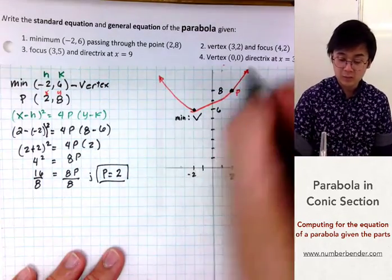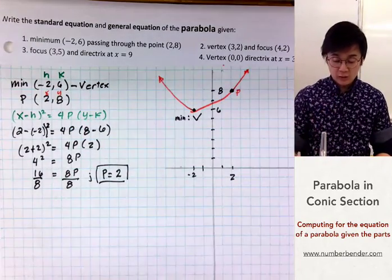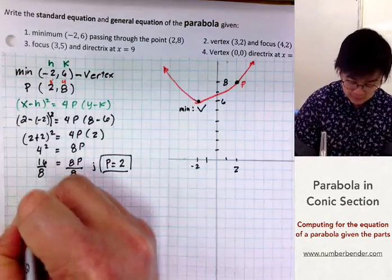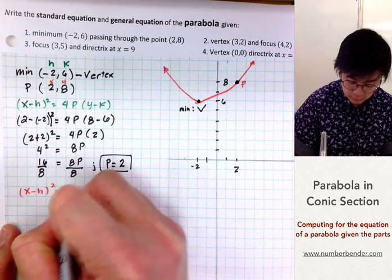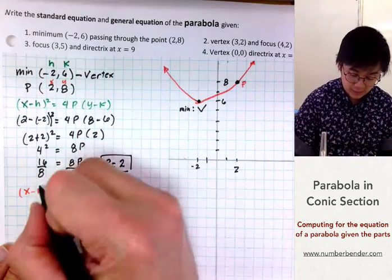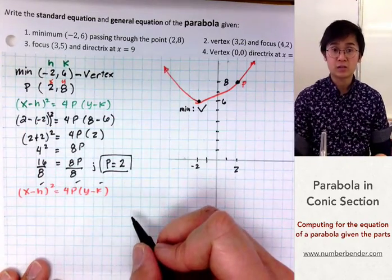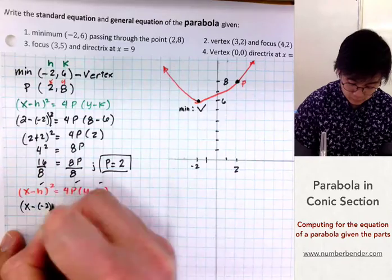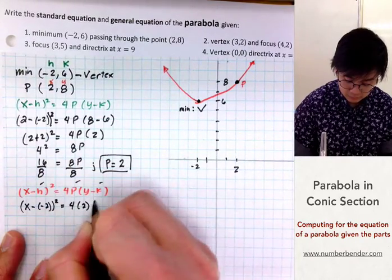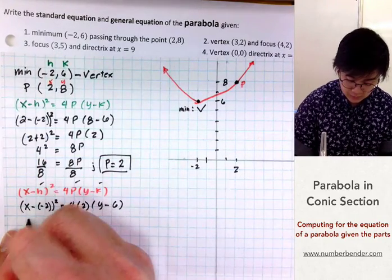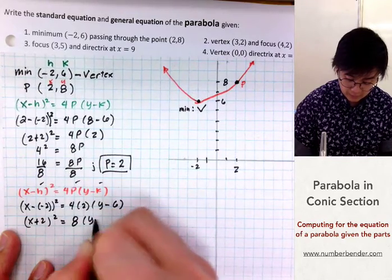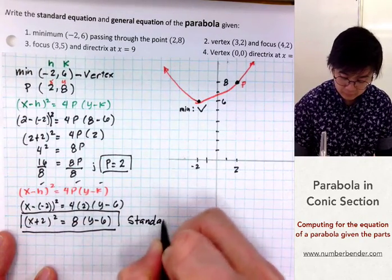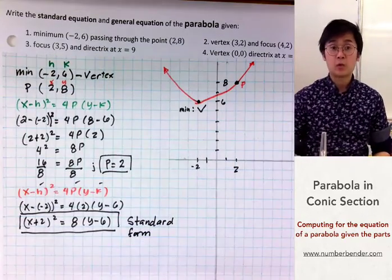Since p is positive, we confirm the parabola opens upwards. Now, to write the standard equation, we substitute h = −2, k = 6, and p = 2 back into (x − h)² = 4p(y − k), giving us (x − (−2))² = 4(2)(y − 6), which simplifies to (x + 2)² = 8(y − 6). This is the standard form of our parabola.